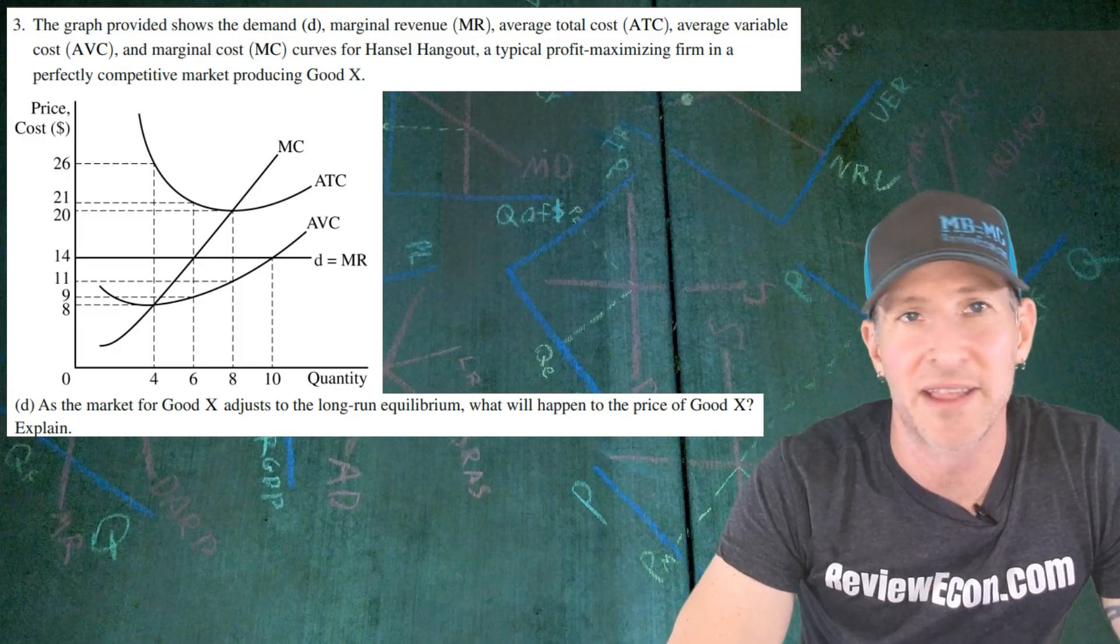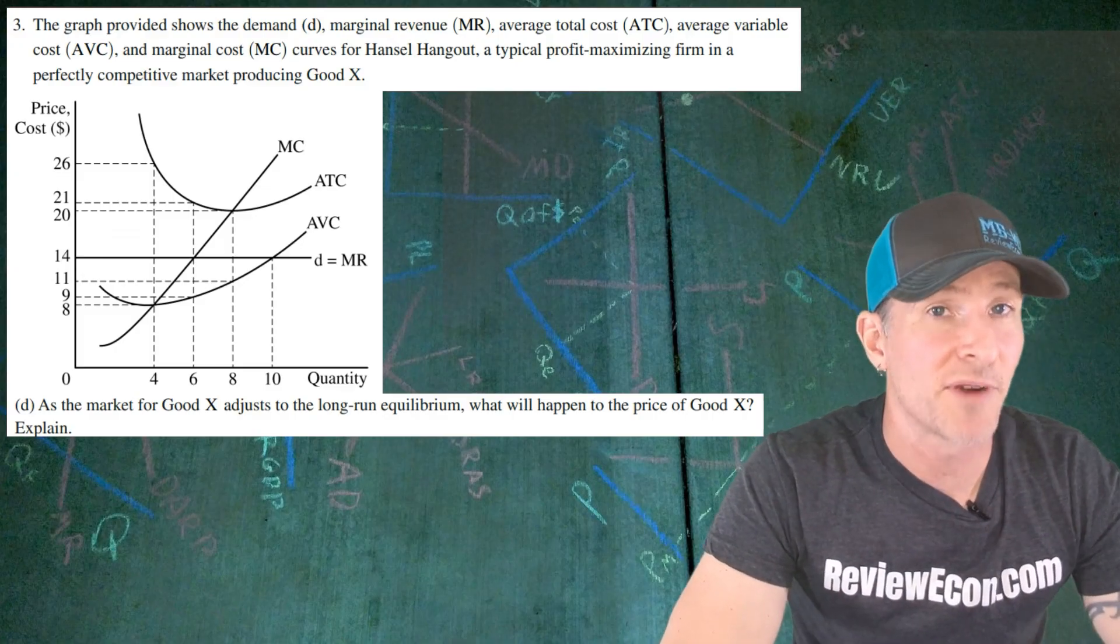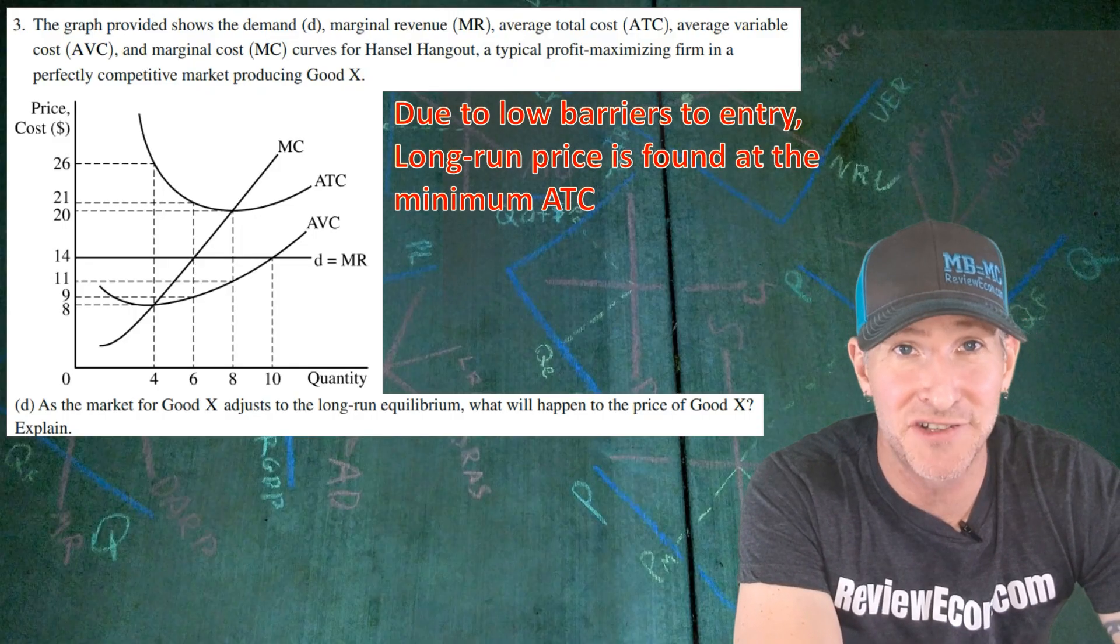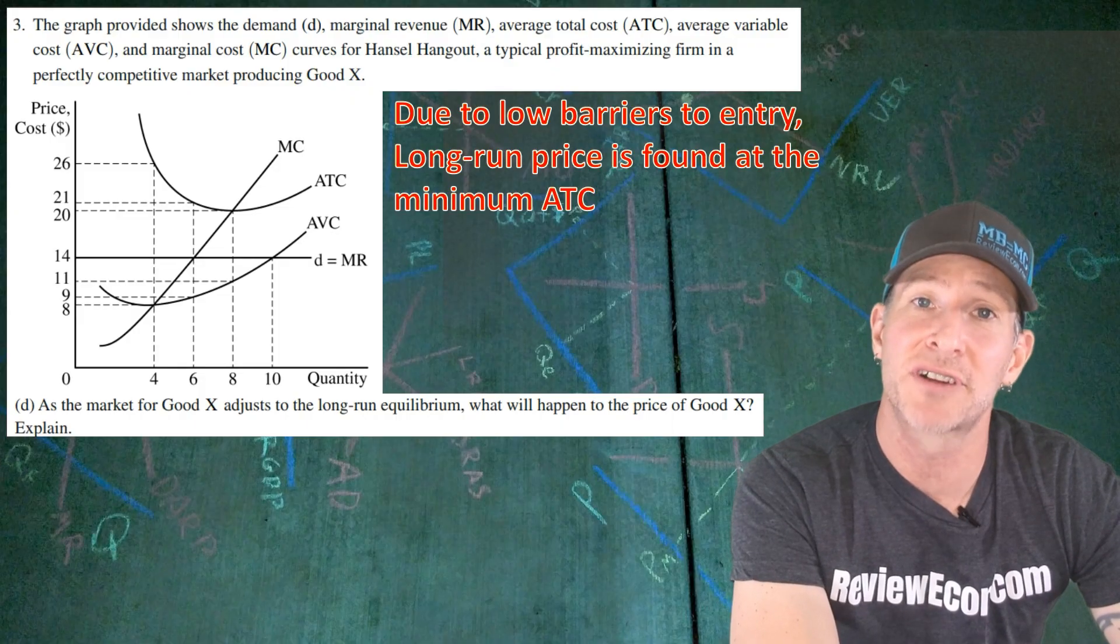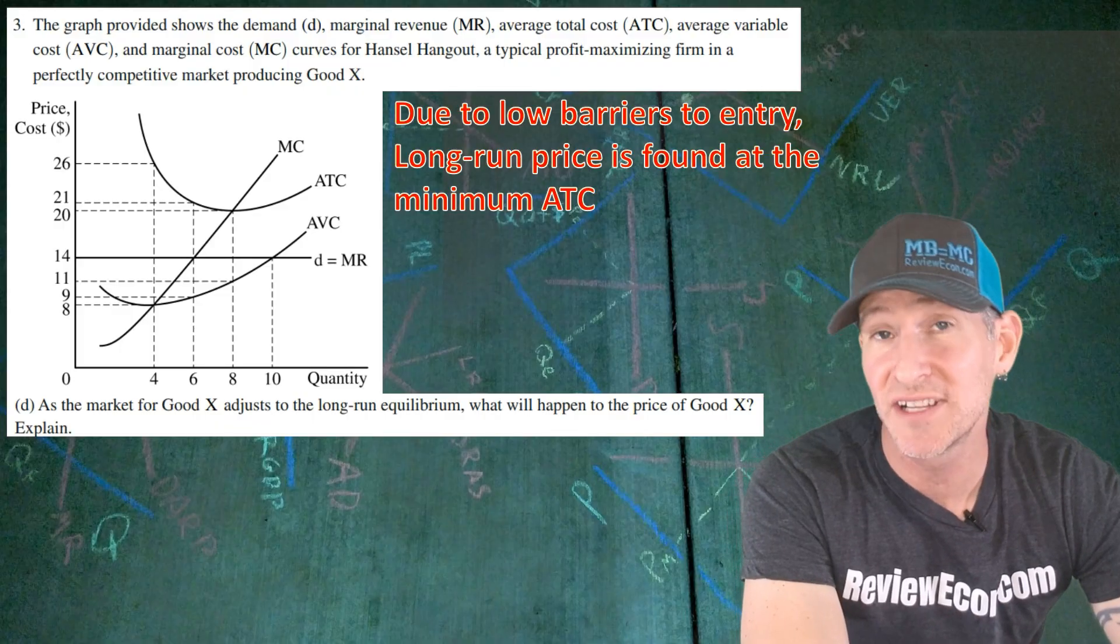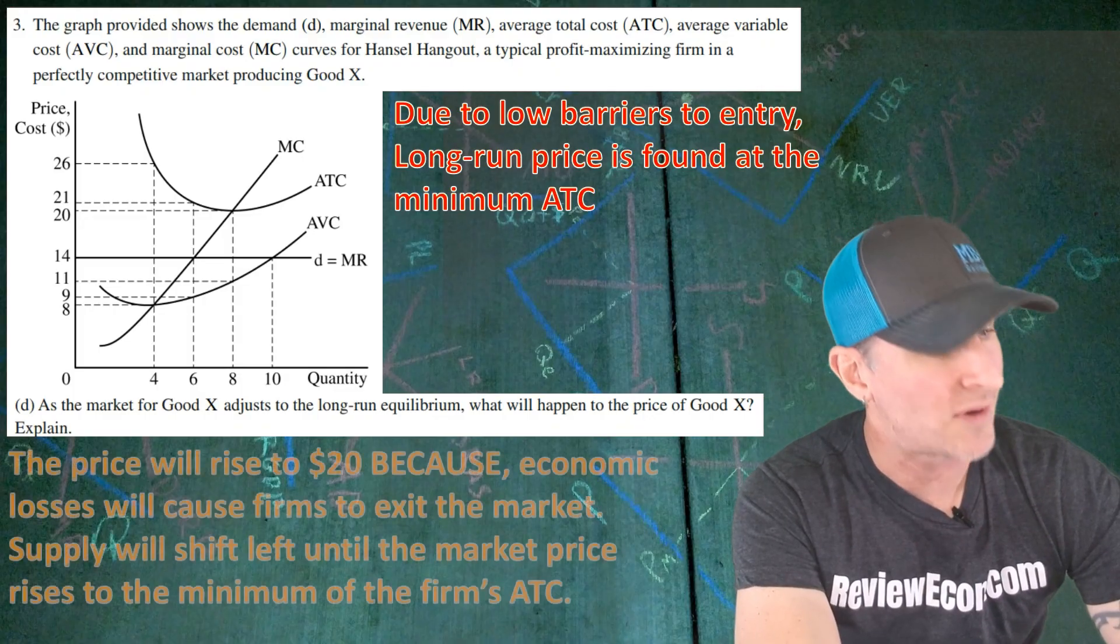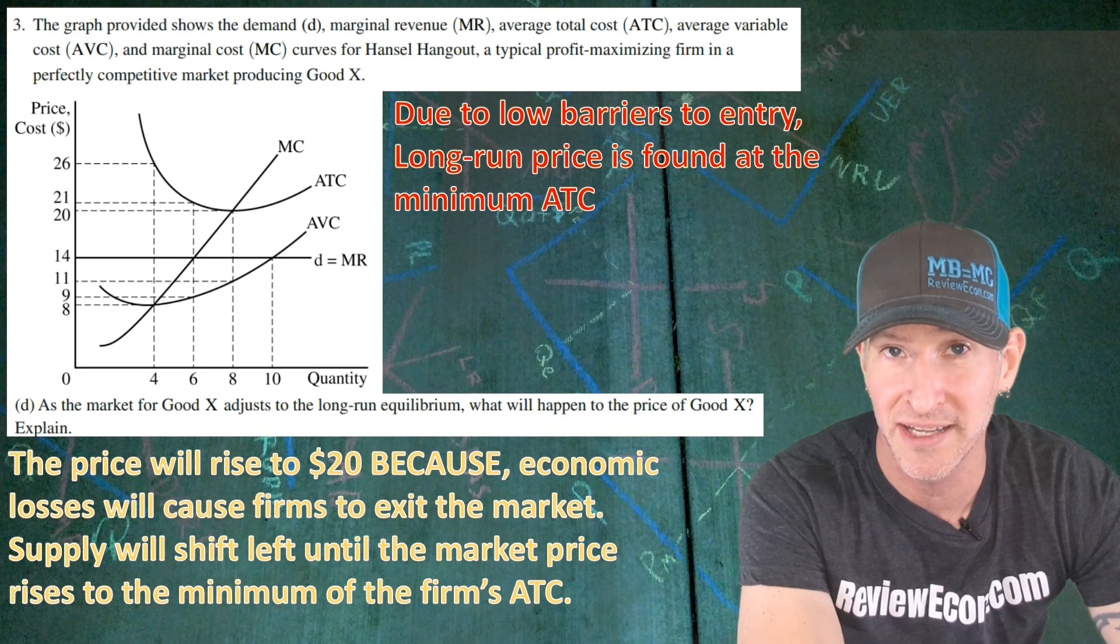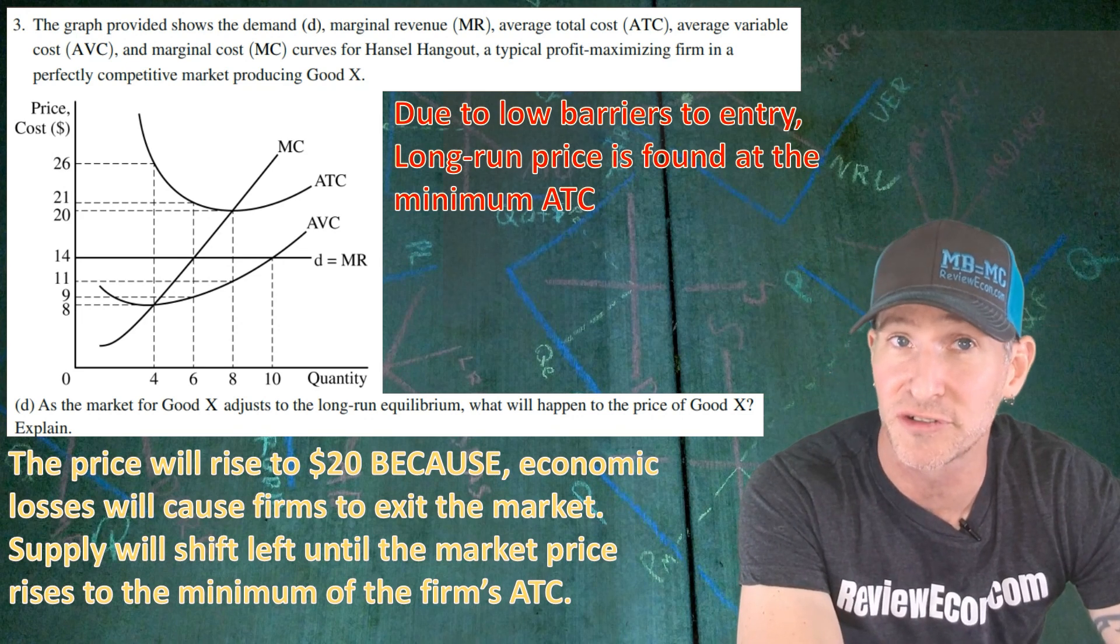For part D, we are told to assume that the market for good X adjusts to a new long-run equilibrium. We have to say what will happen to the price of good X and explain. Now, remember, perfectly competitive firms have low barriers to entry and exit. That means that the long-run price is going to be found at the minimum of the average total cost curve where the firm breaks even. And that's because firms always enter or exit, shifting the supply in the market, bringing the price to that level. So that leads us to our answer here. The price will rise to $20 because economic losses will cause firms to exit the market, shifting the supply to the left, rising the price to the minimum of the firm's average total cost curve.